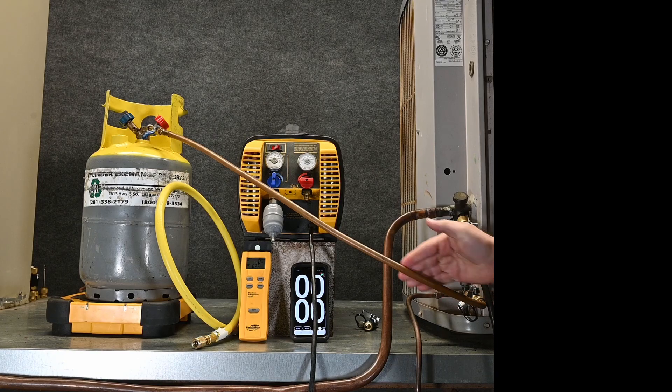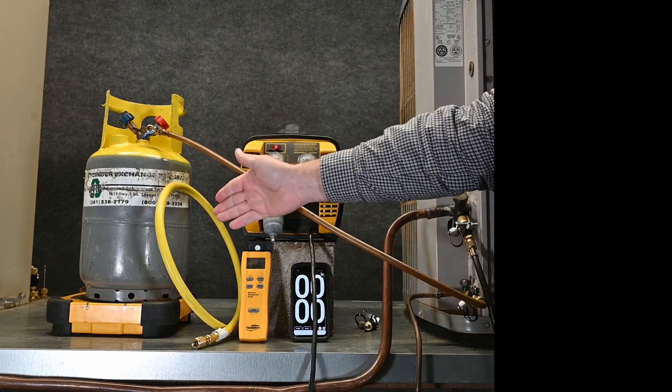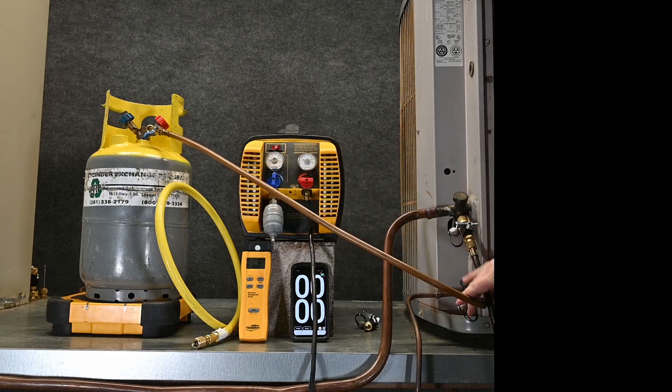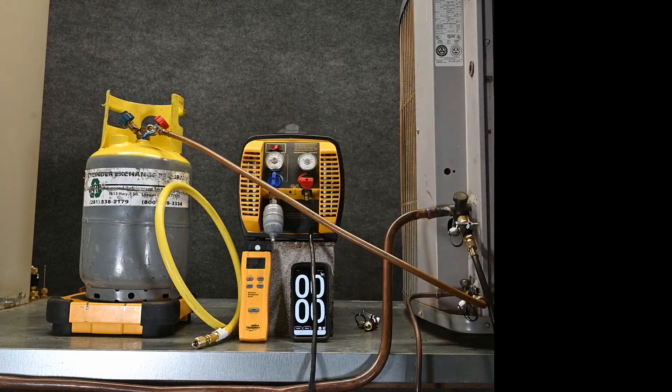Now because I only have a quarter-inch hose going to this recovery tank, that straw also being a quarter-inch size isn't going to slow us down, so I'm going to leave the tank upright. So this way we've connected the liquid line to the liquid port of our recovery tank.